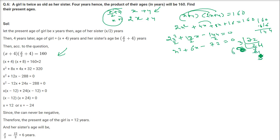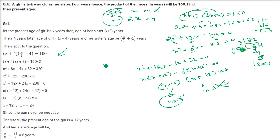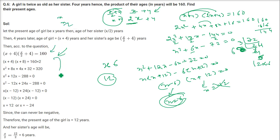72 can be written as 12 into 6. So we write: X square plus 12X minus 6X minus 72 equals 0. Taking X common: X(X plus 12), and minus 6 common: minus 6(X plus 12) equals 0. Factors: X minus 6 and X plus 12. So X equals 6 or X equals minus 12. Age cannot be negative, so X equals 6. The sister's age is 6 and the girl's age is 2X equals 12.